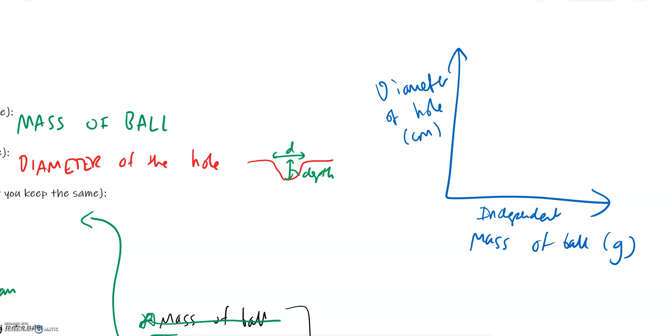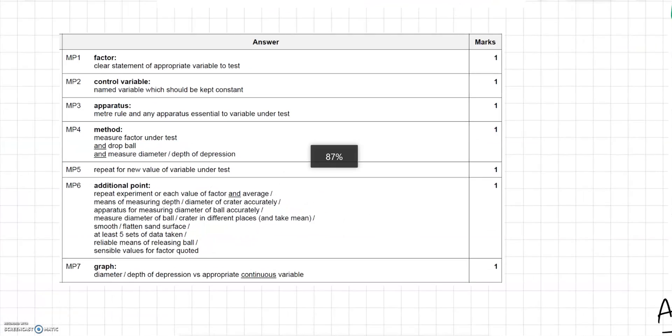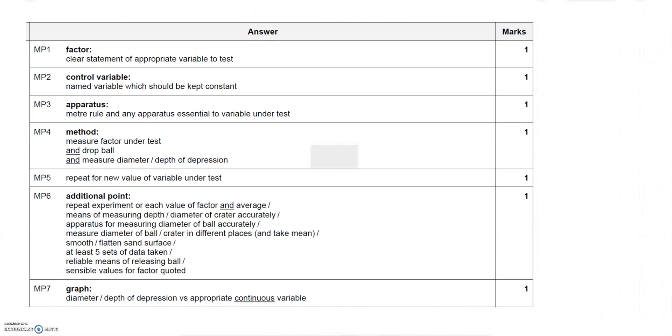And it's always independent variable on the x-axis against the dependent variable on the y-axis. Well, nearly always. But you can also write it in words, so you could write plot mass of ball versus diameter of hole. Now if we go to our mark scheme, feel free to pause the video to look at this in more detail.